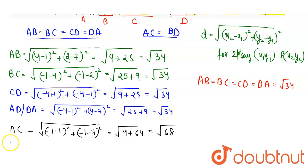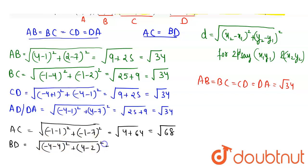Now diagonal BD = √[(−4 − 4)² + (4 − 2)²] = √[(−8)² + (2)²] = √[64 + 4] = √68.